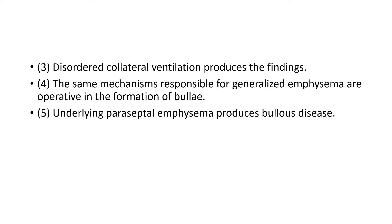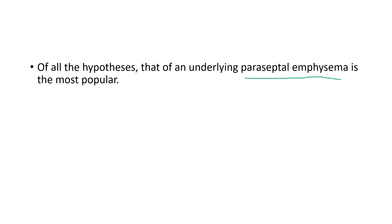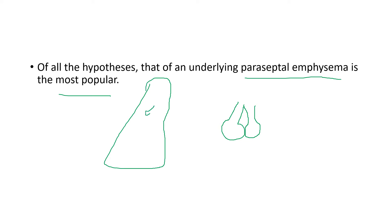The most widely accepted hypothesis is paraseptal emphysema. In this condition, over time there is elastolysis and proteolysis of the intra-alveolar septum. As a result, the alveoli enlarge into paraseptal emphysema, leading to the formation of bullae in the lungs.